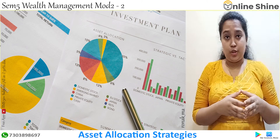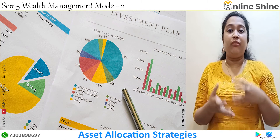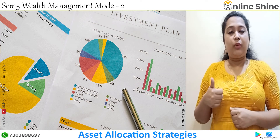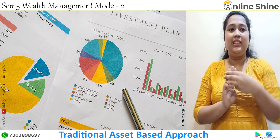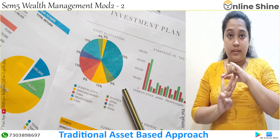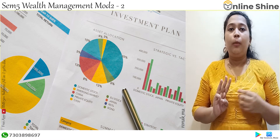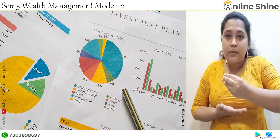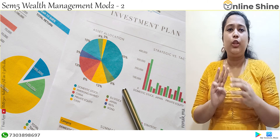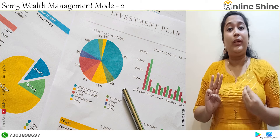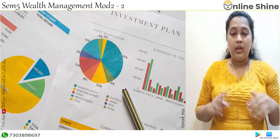Now let us see asset allocation strategy. This is a strategy where assets are allocated in such a way that the investor can get maximum benefit and maximum returns. The first one is using a traditional based approach. This approach divides investors into three categories: adventurous, moderate, and conservative. Adventurous investors invest 80% in equity and 20% in bonds. Moderate investors invest 50% in equity, 45% in bonds, and keep 5% as cash. Conservative investors invest 20% in equity, 60% in bonds, and keep 20% as cash.